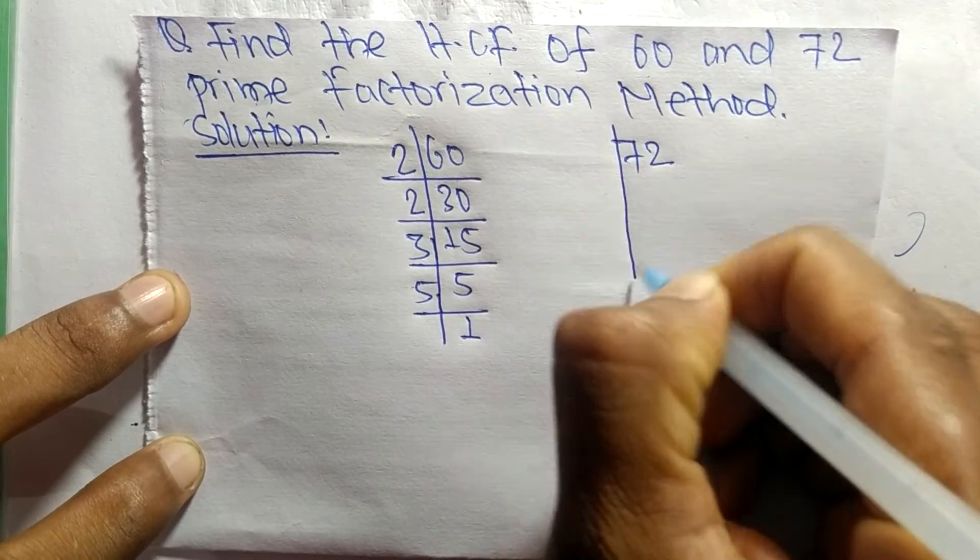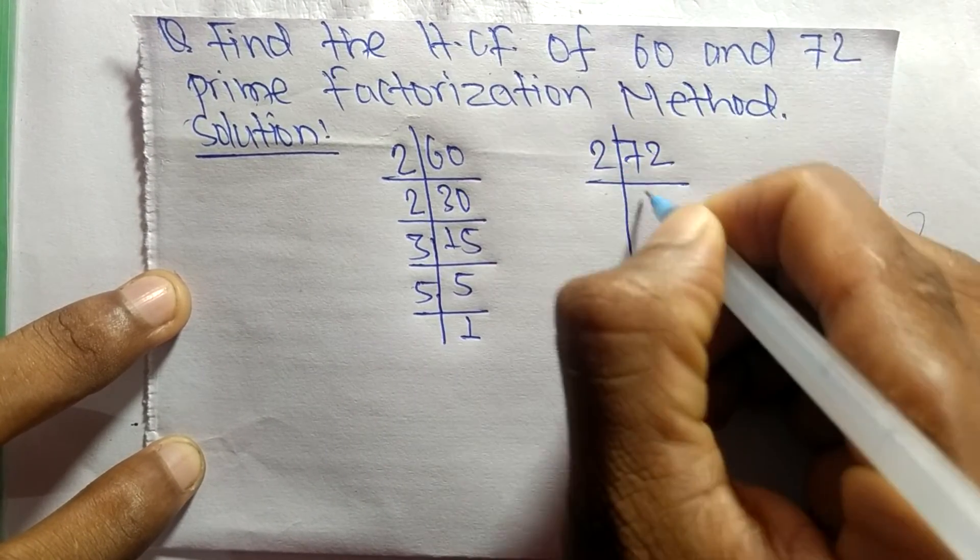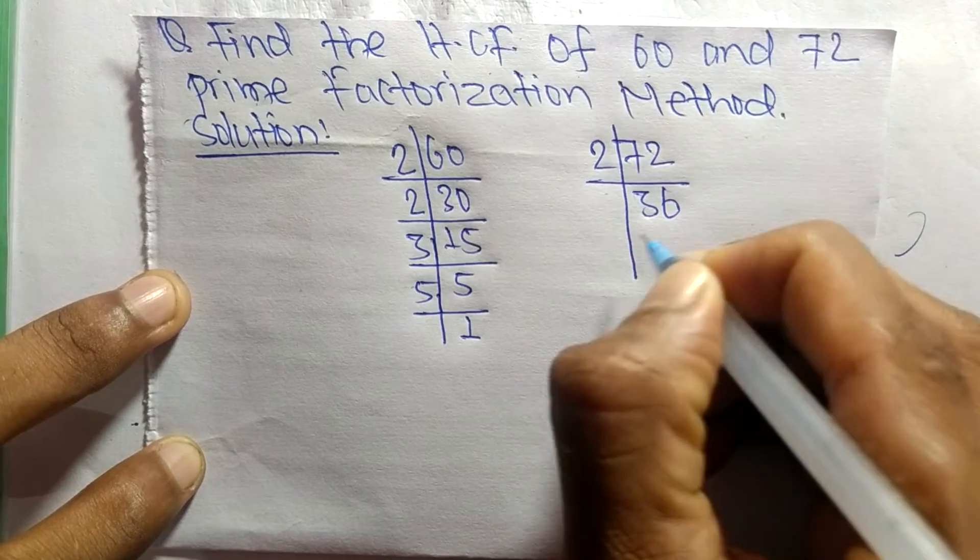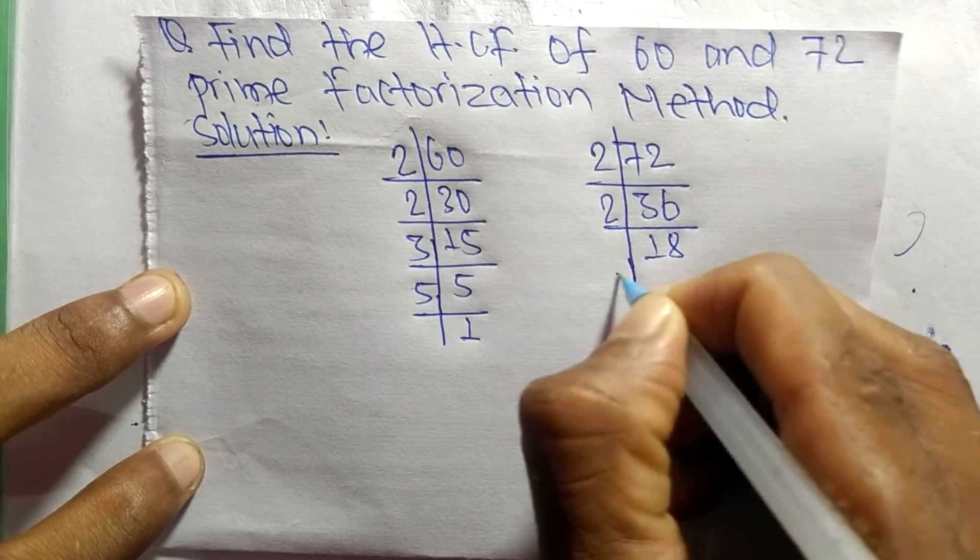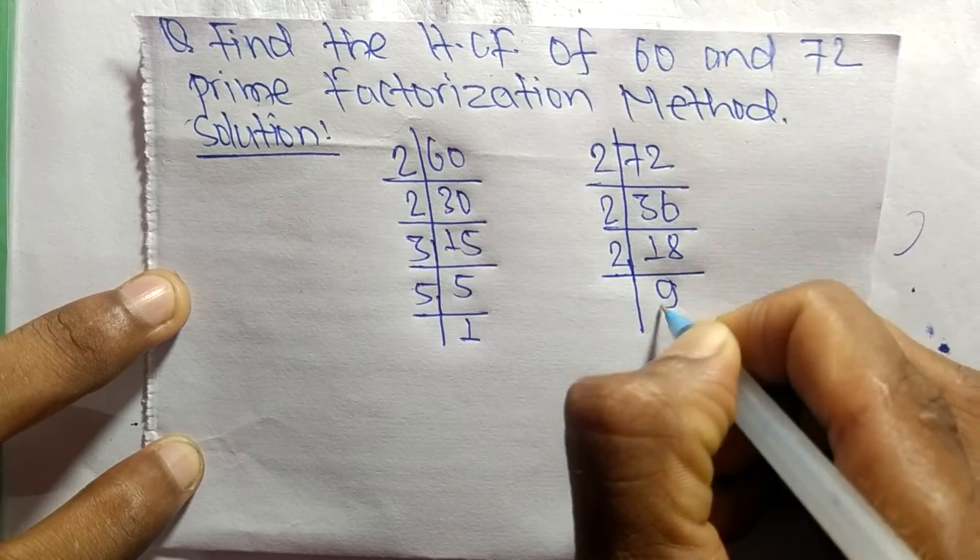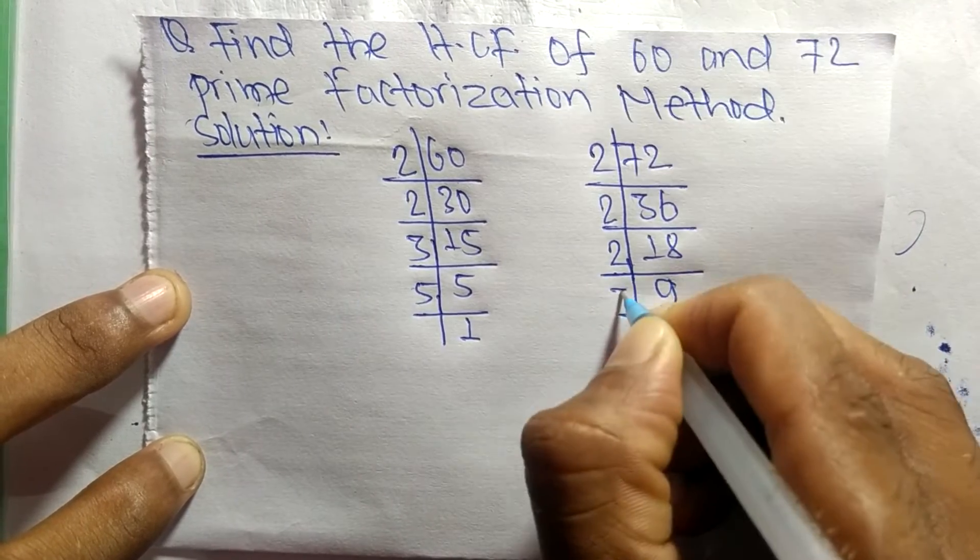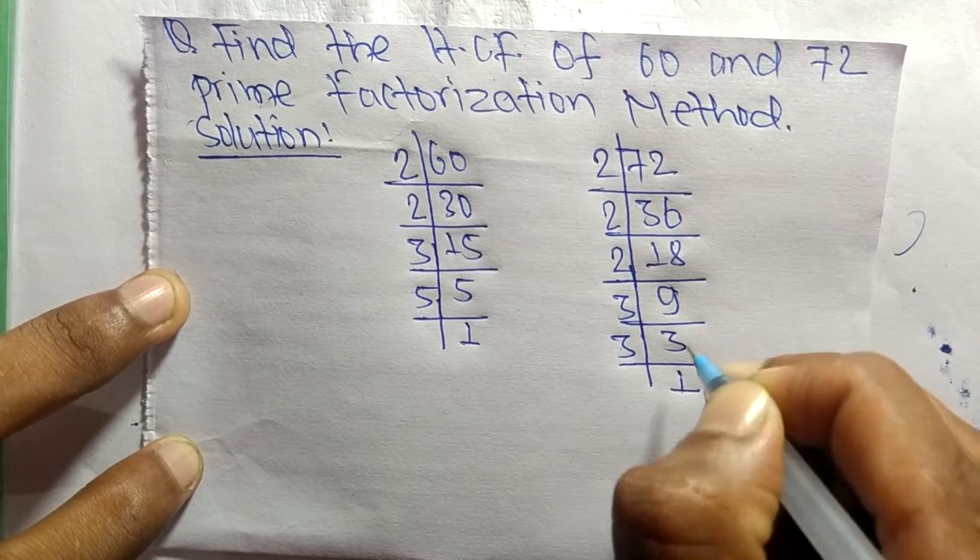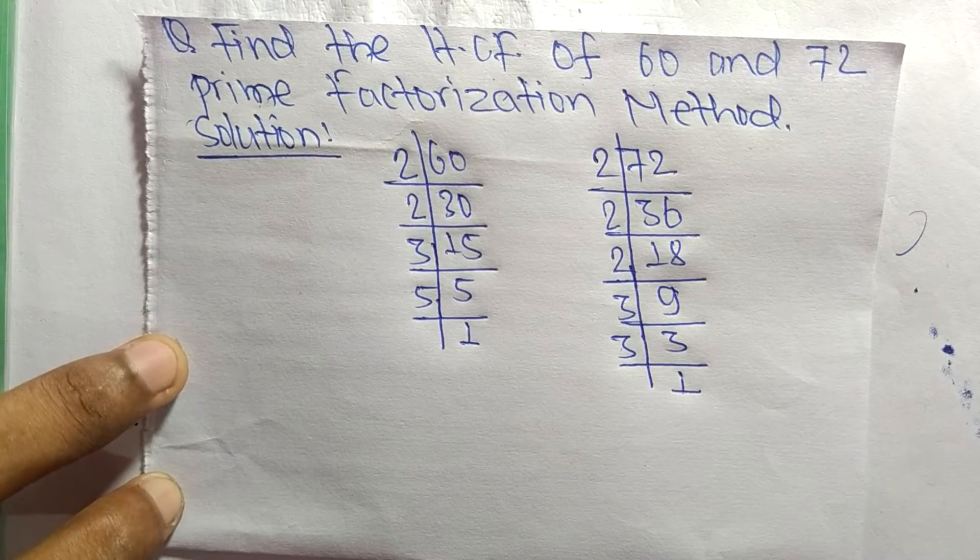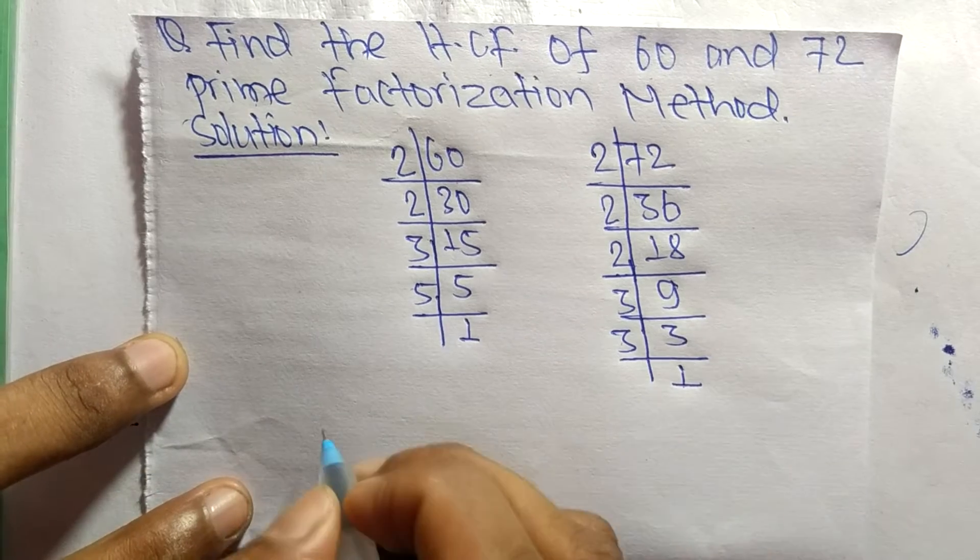The prime factors of 72 are: it is 2 times 36 equals 72, 2 times 18 equals 36, 2 times 9 equals 18, 3 times 3 equals 9, and 3 times 1 equals 3.